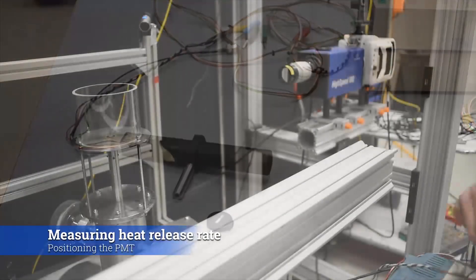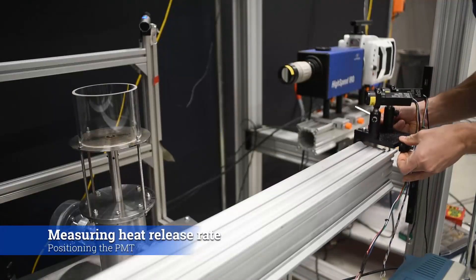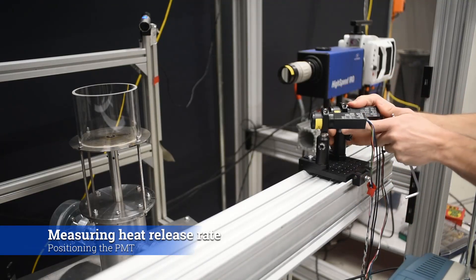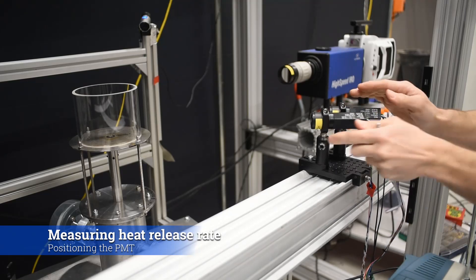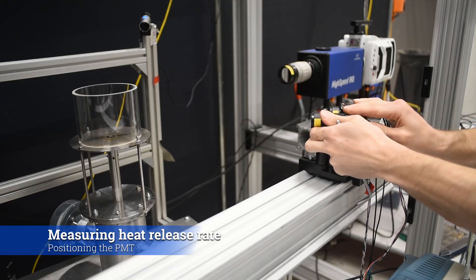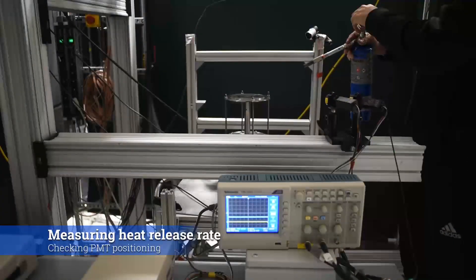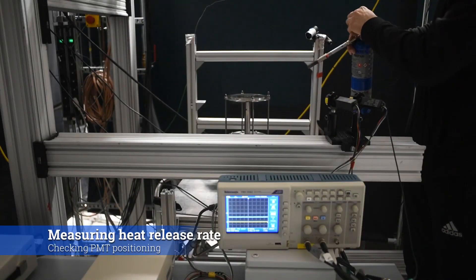Here we see two PMTs being mounted on an aluminium rail. It's critical to place the PMT such that the same light intensity emitted anywhere in the flame would result in approximately the same number of photons reaching the PMT. This means that the distance between the PMT and the flame must be much greater than the width of the flame. The uniformity of the PMT response should be checked.